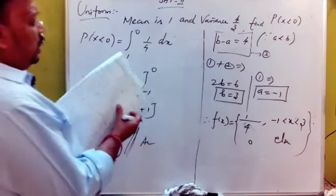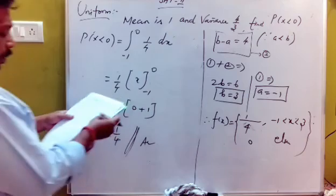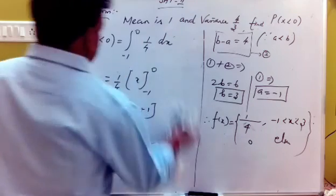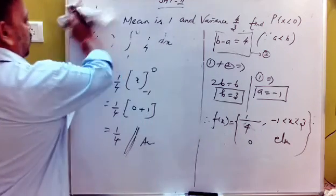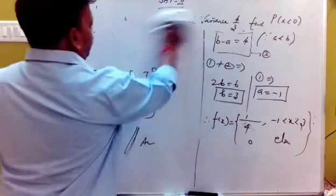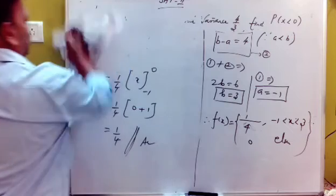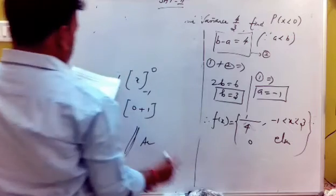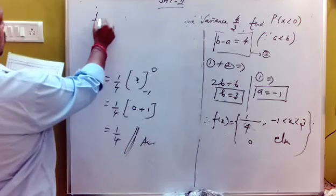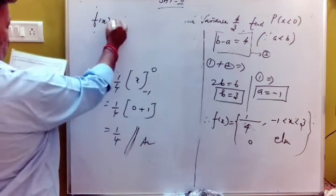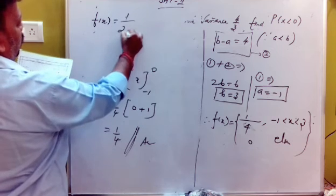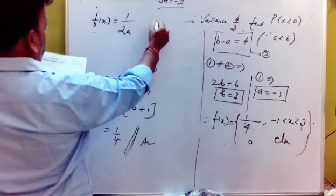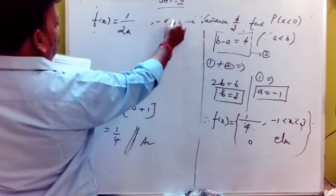Evaluating the integral: (1/4) × [x] from −1 to 0 gives (1/4) × (0 − (−1)) = 1/4.